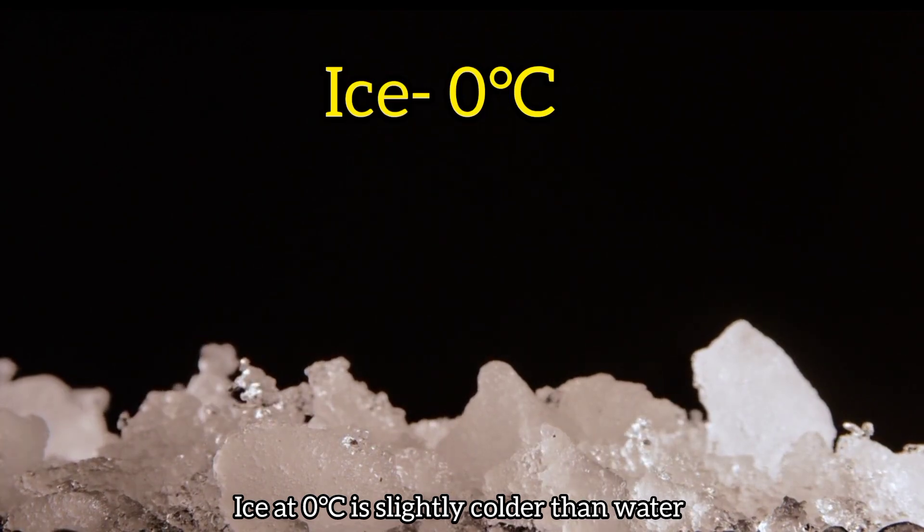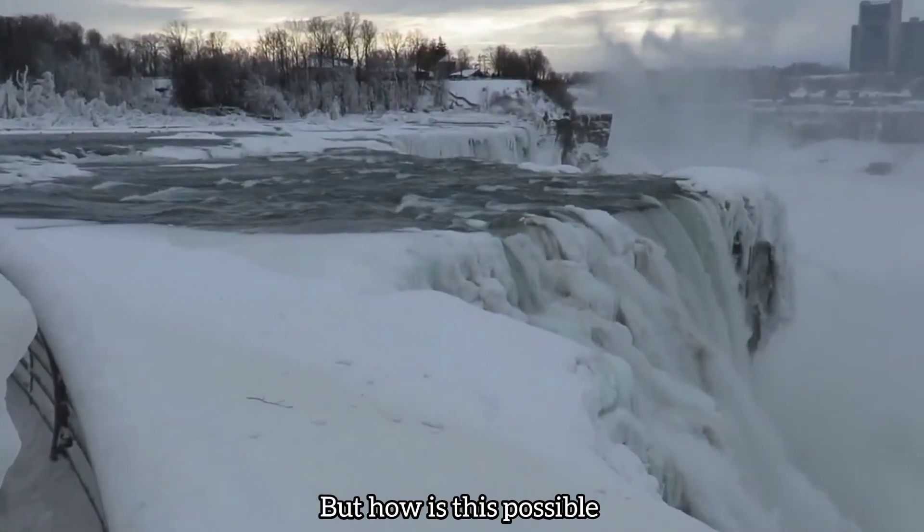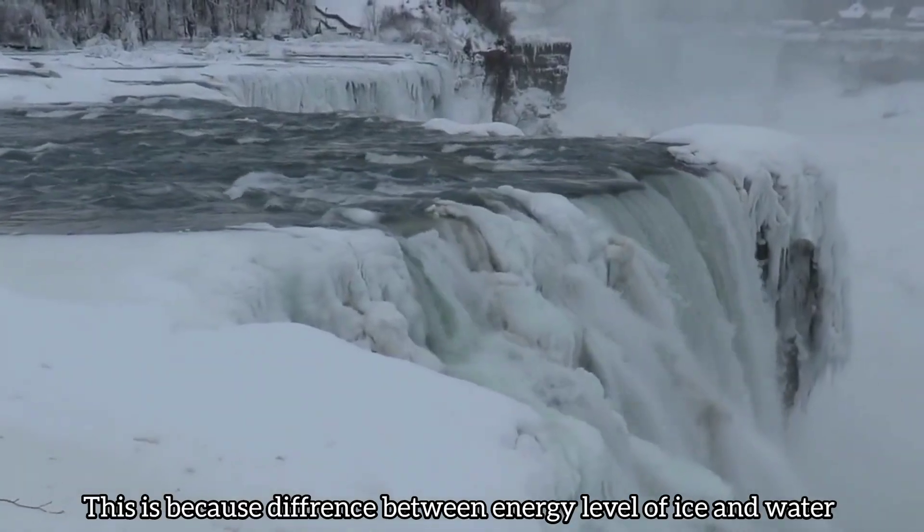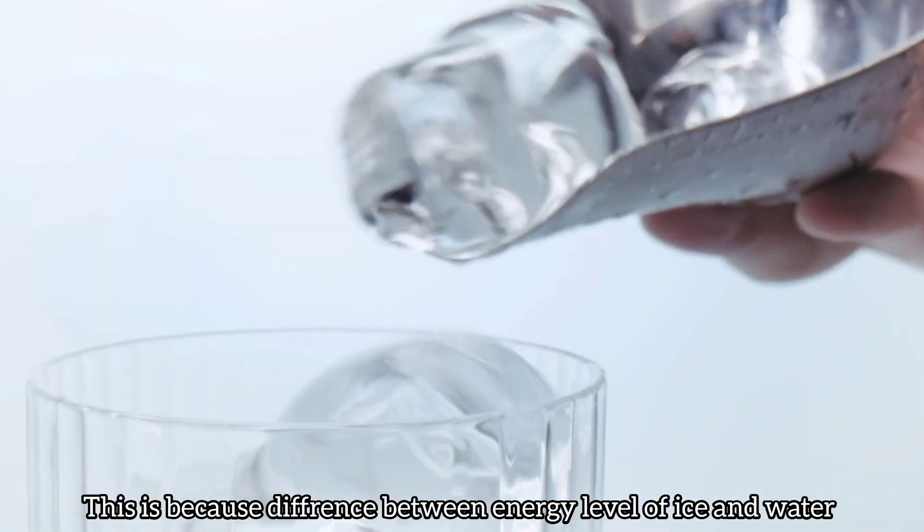Ice at 0 degrees Celsius is slightly colder than water at the same temperature. But how is this possible? This is because of the difference between energy levels of ice and water.